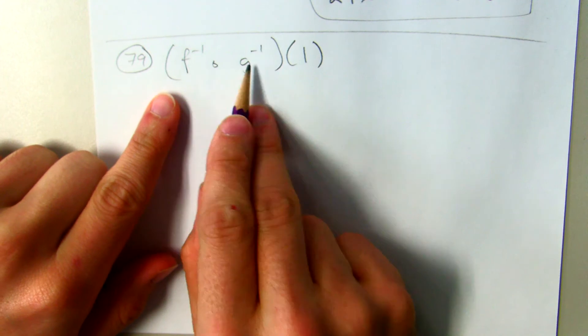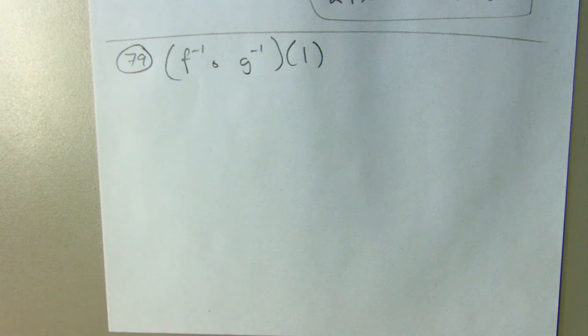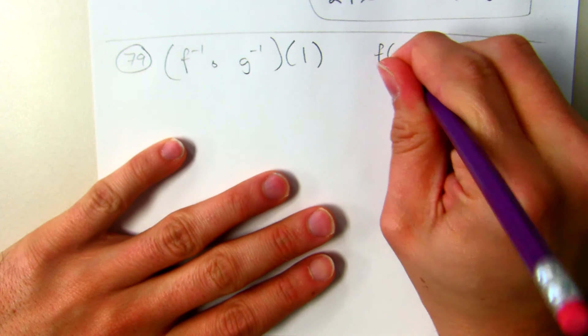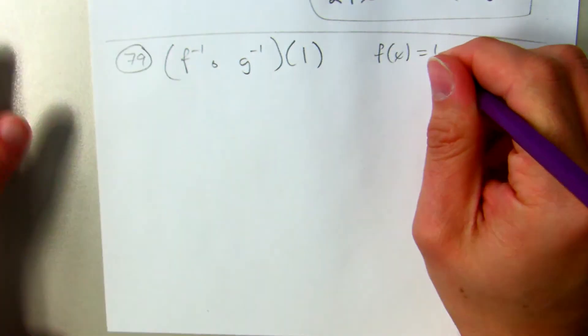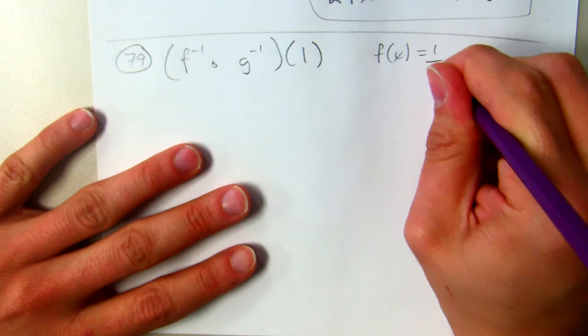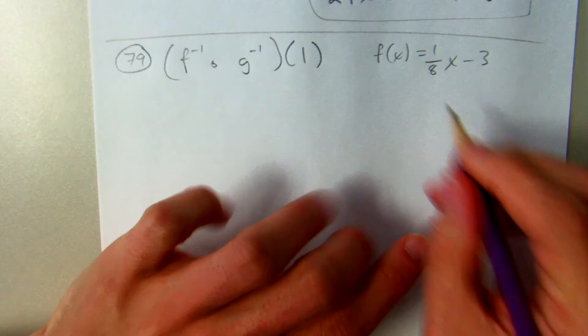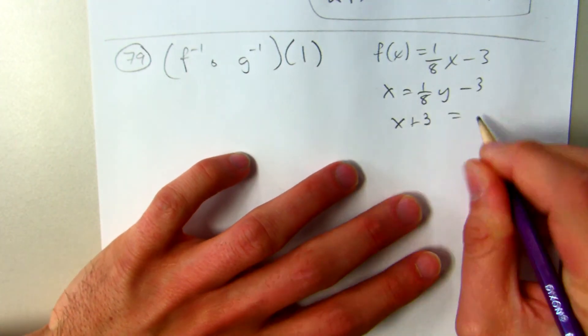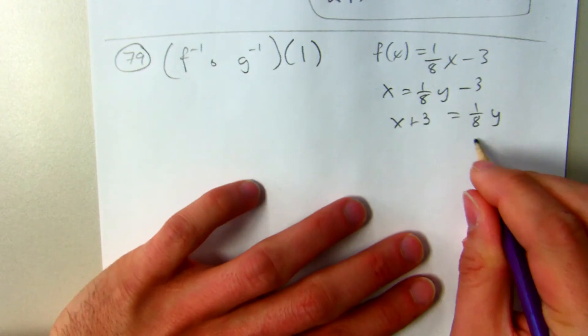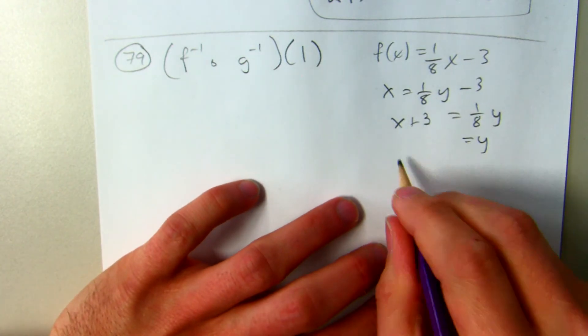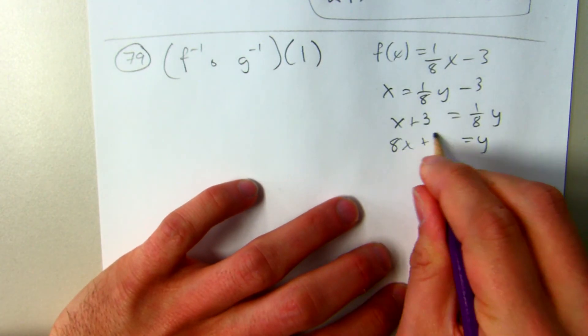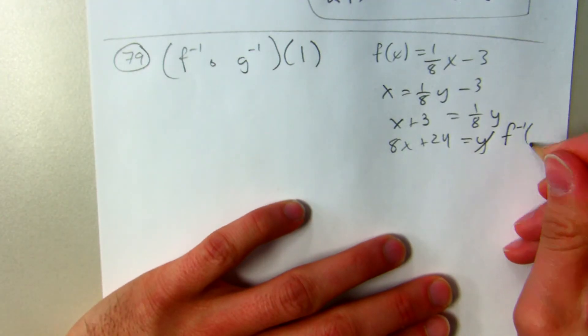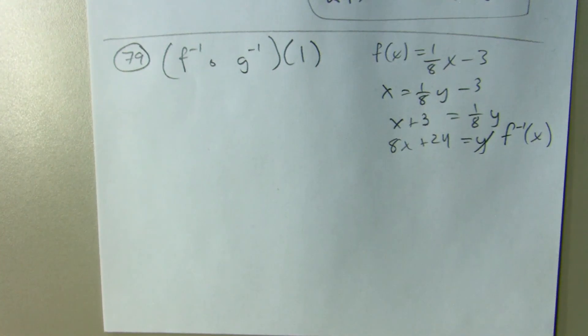To even do this, I need to know the inverse of F and G. So if F is 1/8 of X minus 3, switch X and Y, solve for Y. We're going to keep up with our notation correctly, so there's the inverse of F.